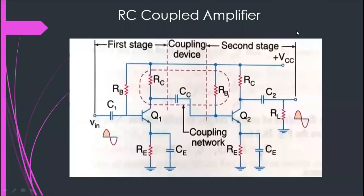We need to study in a bit more detail about the RC coupled amplifier. As shown, it has three stages: the first stage, the coupling stage, and the second stage. The circuit consists of two single-stage common emitter transistor amplifiers — transistor amplifier one and transistor amplifier two, both in common emitter configuration. The resistors RC, RP, and the capacitor CC together form the coupling network.